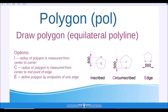The first option, I, allows you to specify the radius from center to corner. For example, with a radius of 500, it will be from the center to the corner — that is the size of the polygon. The second option, C, specifies the radius of a circle measured from center to midpoint of edge.